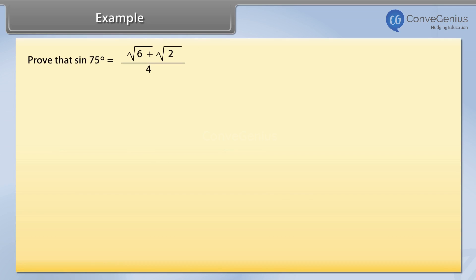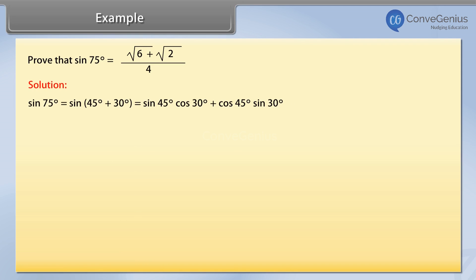Prove that sine of 75 degrees is equal to (√6 + √2) / 4. Sine of 75 degrees is equal to sine of 45 degrees plus 30 degrees. That is, sine 45 degrees into cos 30 degrees, plus cos 45 degrees into sine 30 degrees.